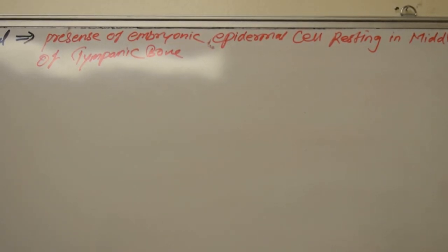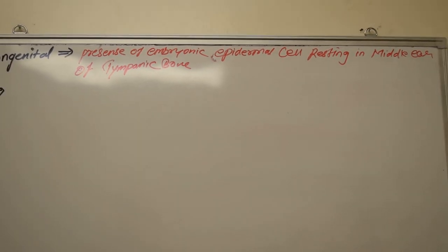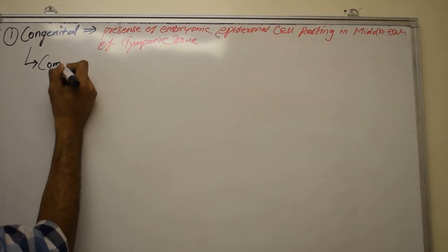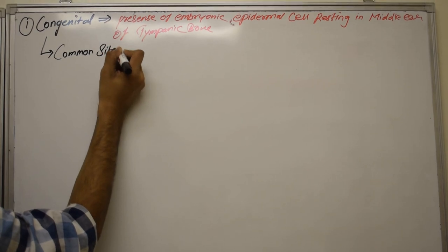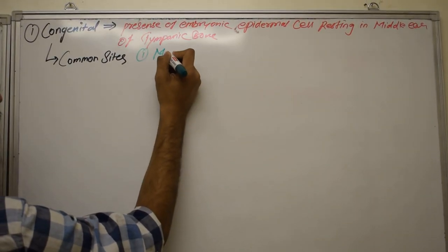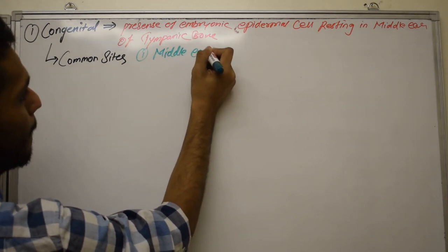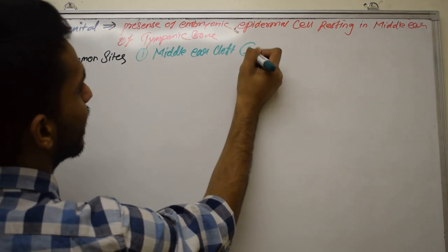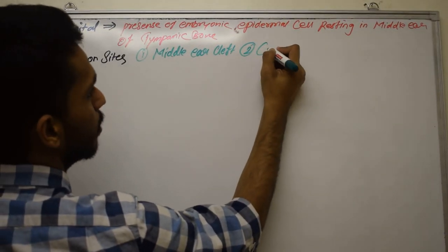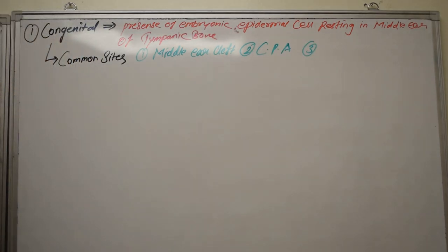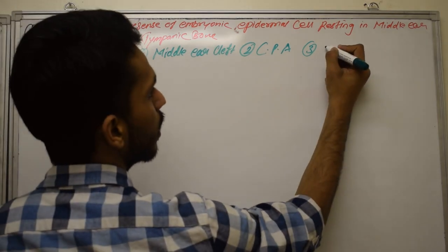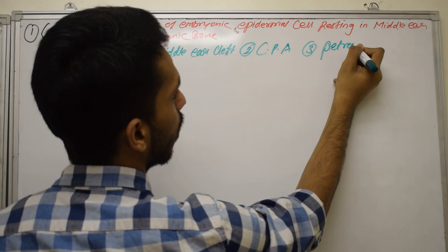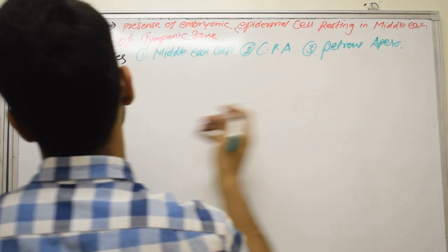The common sites where congenital Cholesteatoma occurs are three: first, the middle ear cleft; second, the cerebellopontine angle; and third, the apex of the petrous bone.